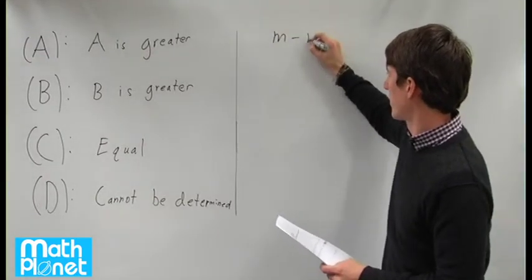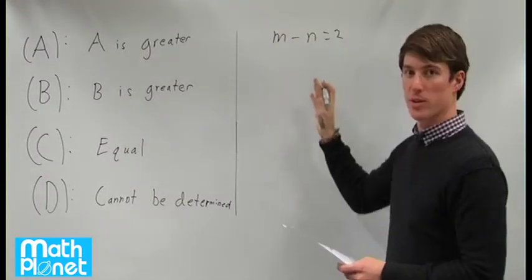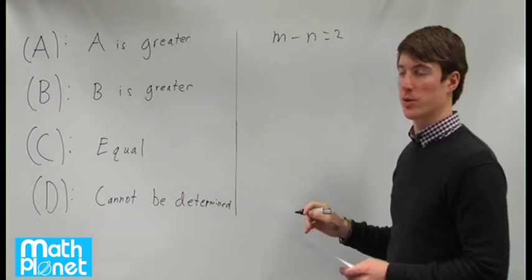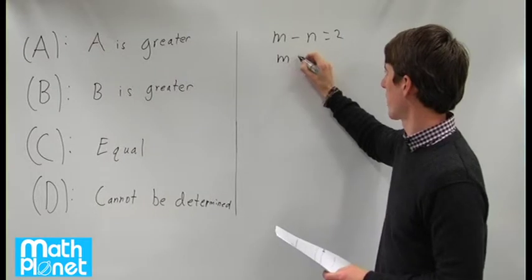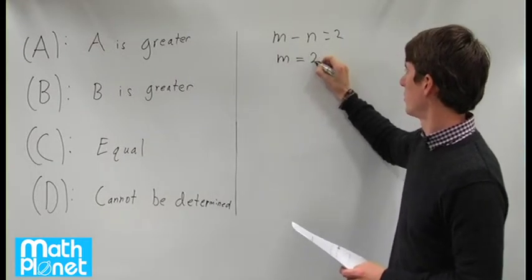We know that m minus n equals 2, so we can solve for m and replace it in our two expressions to find out what those are in terms of one variable. This gives us m equals 2 plus n.